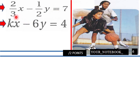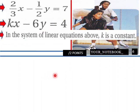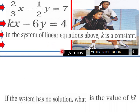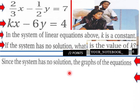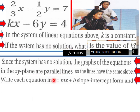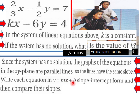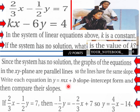So, here's an example here of a system. In a system with linear equations above, k is a constant. If the system has no solution, what is the value of k? Since there's no solution, the graphs of the equations are parallel. So, we've got to find y equals mx plus b, where m is the same for both.